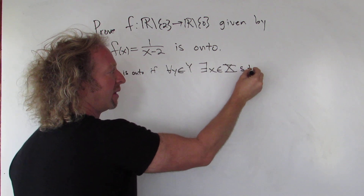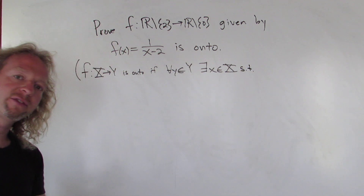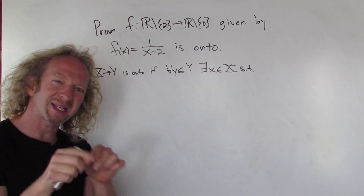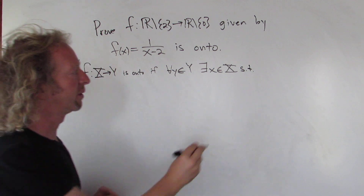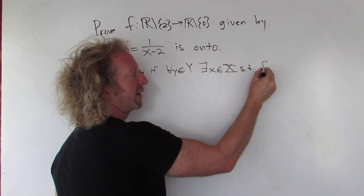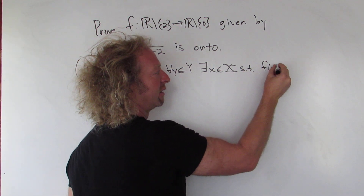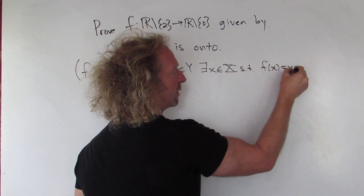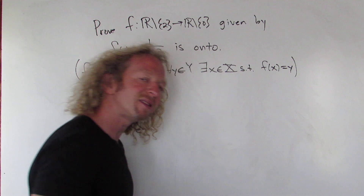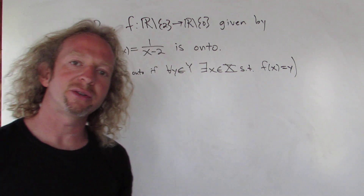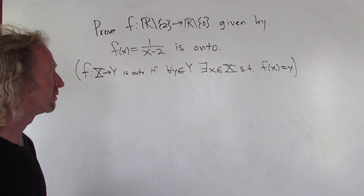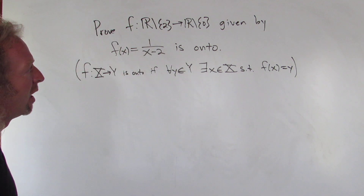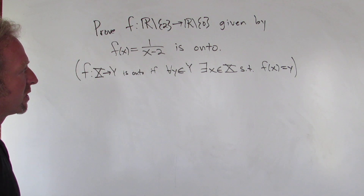such that f takes little x and sends it to y, so f of x is equal to y. That's the definition of onto or surjective. Now we're going to prove that this function here is surjective.